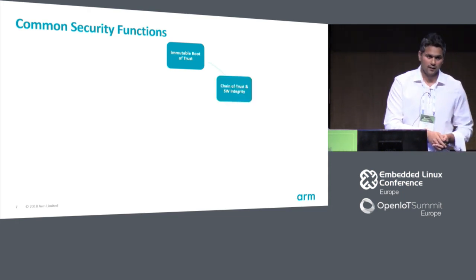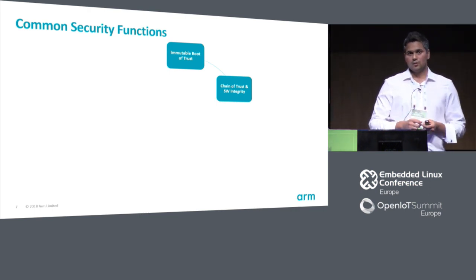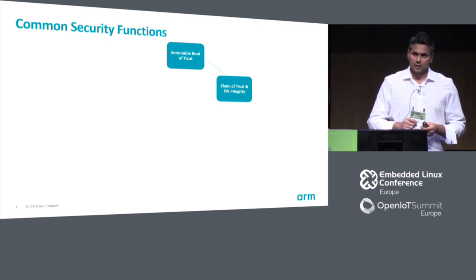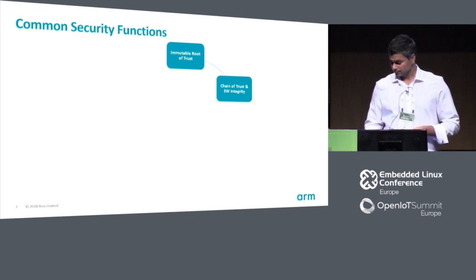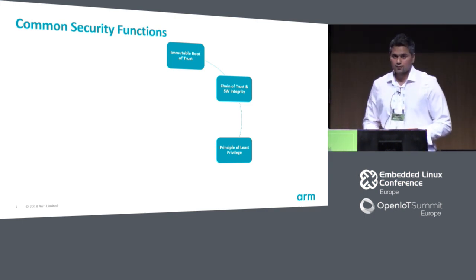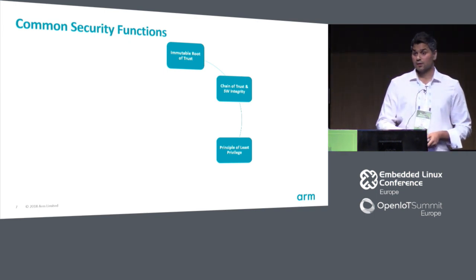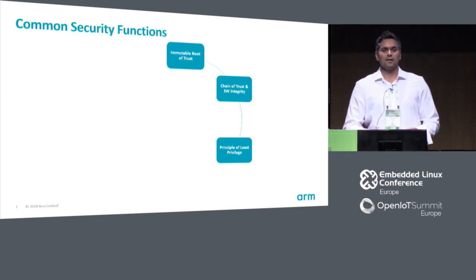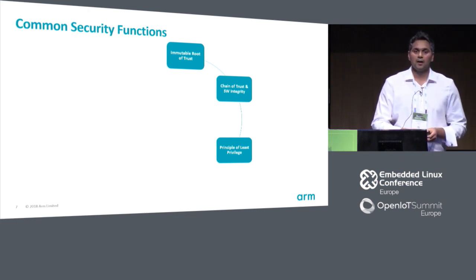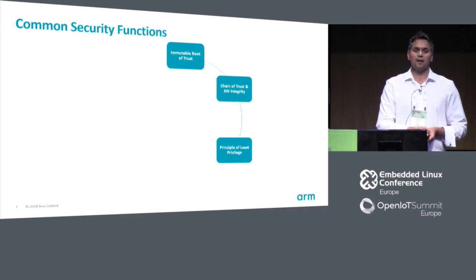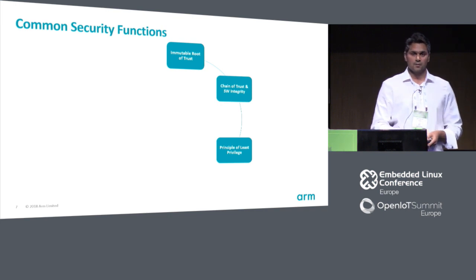That leads to the chain of trust and software integrity. The different links in the chain need to validate the next link, ensuring each entity is certified and not compromised. By creating this chain, we ensure all software running on a device is not compromised. Hardware and software will have bugs, and since devices are in the field for a very long time, we want to contain the scope of every vulnerability. The principle of least privilege means the system should be divided into the smallest possible pieces that do not need to trust each other — applications should be given just enough privilege to function and nothing else.